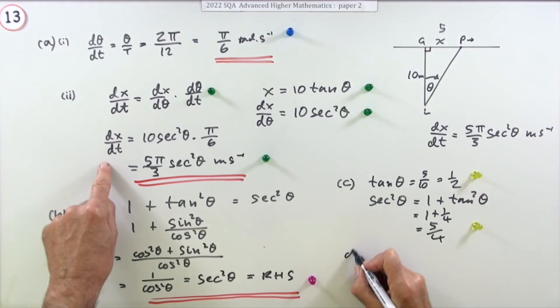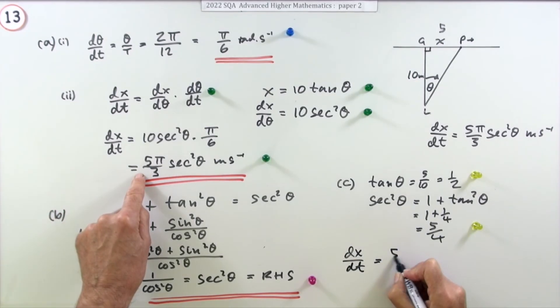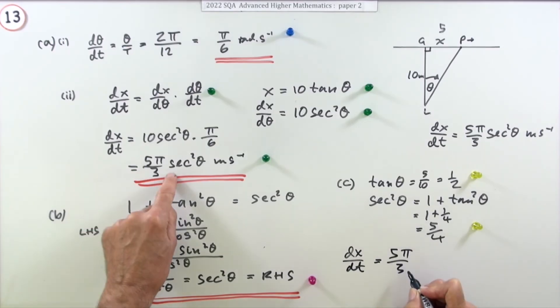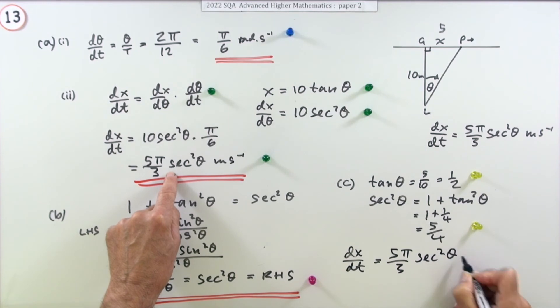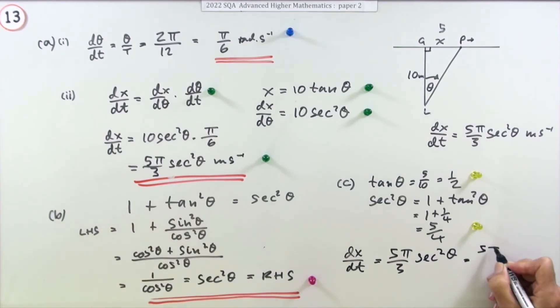So the last part is, what is dx/dt? Well, it should be 5π/3 times sec² θ, so that's 5π/3 times 5 upon 4, so that means it's equal to 25 over 12, 25π upon 12 meters per second for a mark.